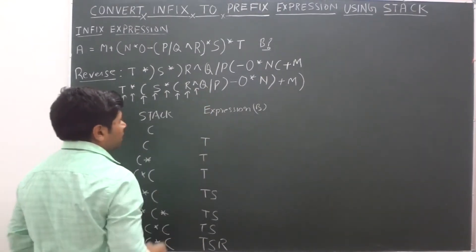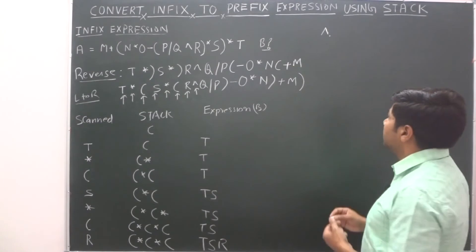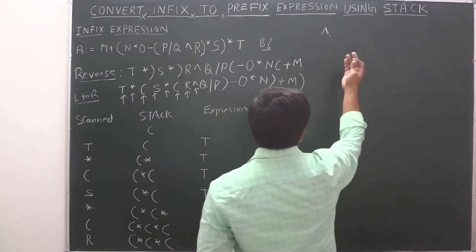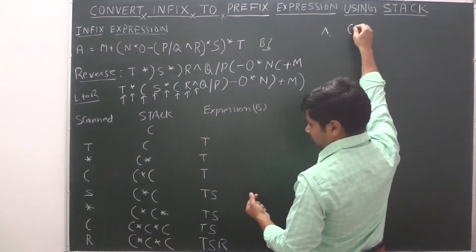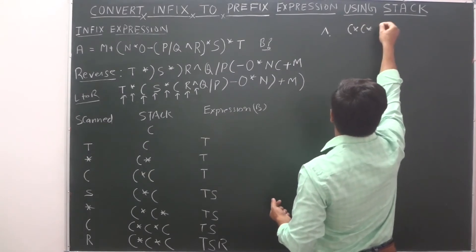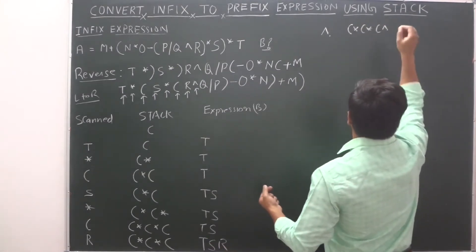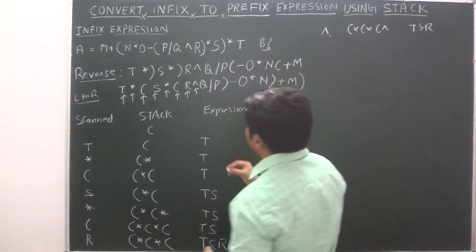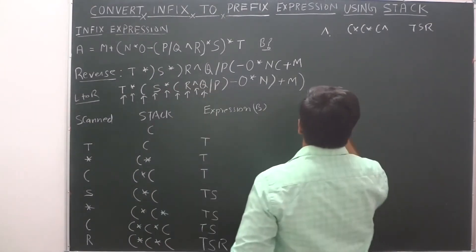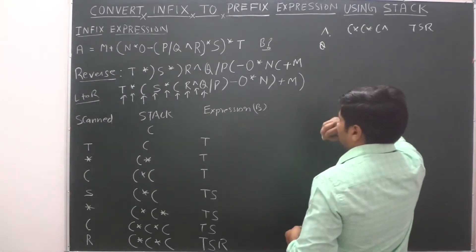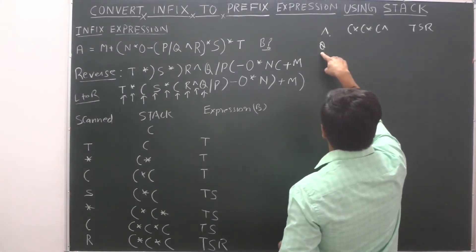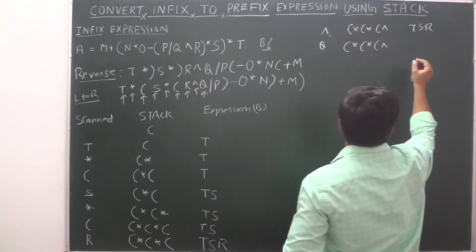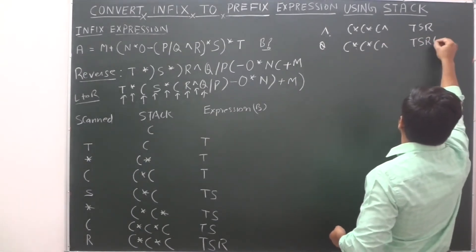Next element is R. R is an operand. For operands, we simply add them to the expression. Then comes an exponential operator, which is an operator, so we push it directly onto the stack. Expression is now T, S, R. Next is Q, which is an operand. We add Q to the expression. Stack has star, star, exponential at top.